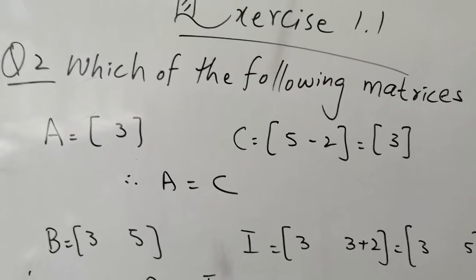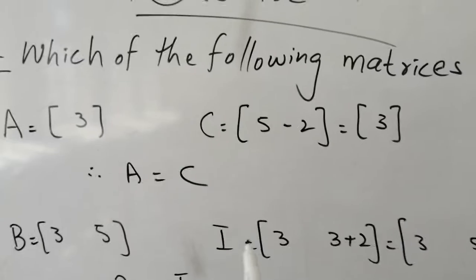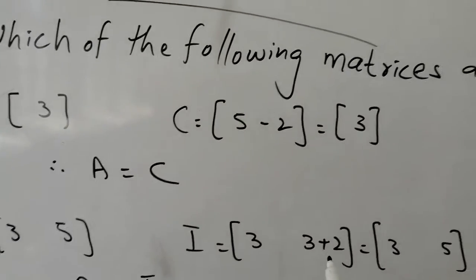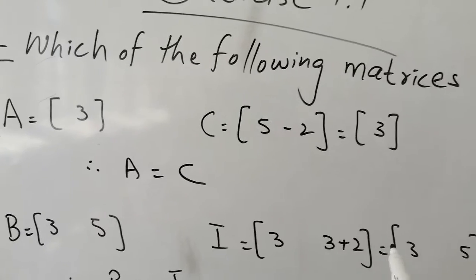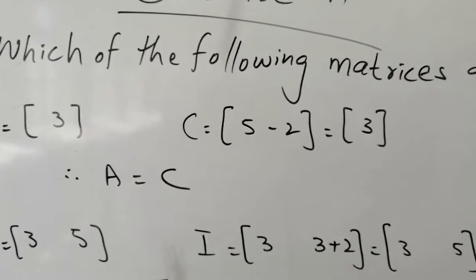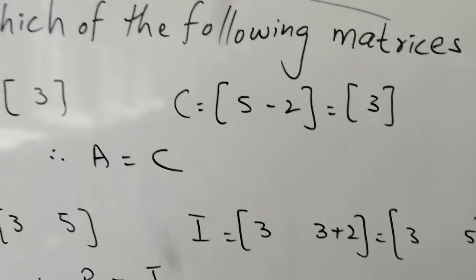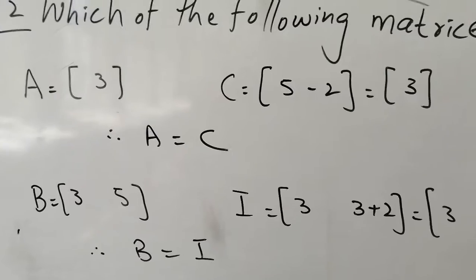Next we have matrix B. The entries are 3 and 5. Then we have matrix I. That was 3 and 3 plus 2. If we add 3 plus 2, then it will be equal to 5. Look, the order is the same. One row and two columns are the same. And the entries are the same. The first entry is the same, the second entry is the same. So when the entries are the same and the order is the same, that means B and I matrices are equal.